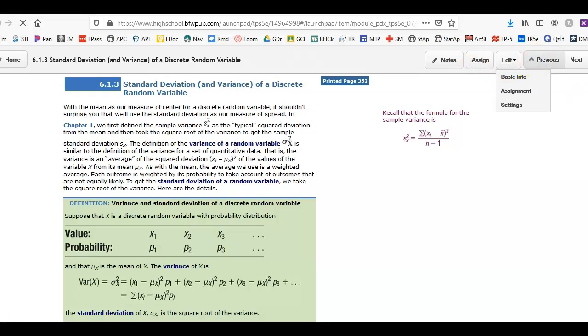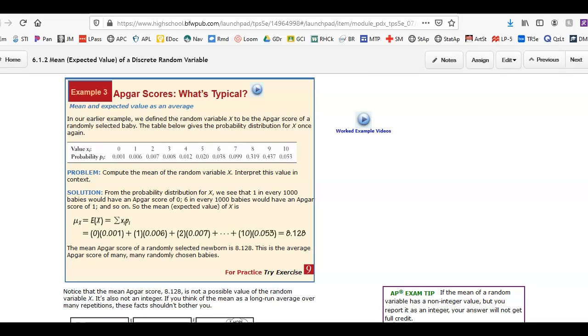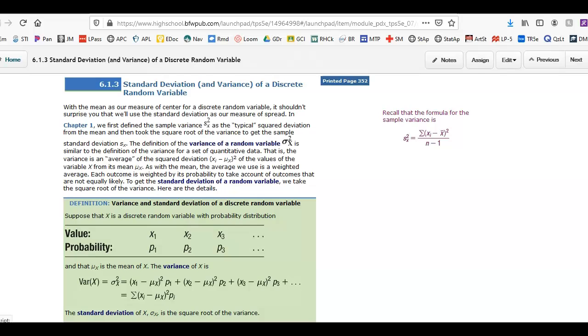It's worth pointing out, when you're interpreting the mean, it's over the long run. So this idea of law of large numbers, this is the average APGAR score of many, many randomly chosen babies. Not just one, just over the long run if we sample many, many babies and take the average of their APGAR scores.